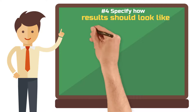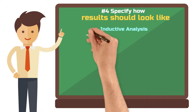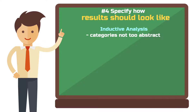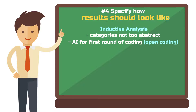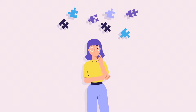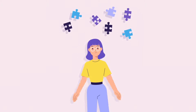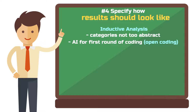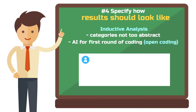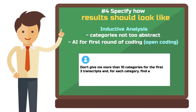For our example, we'll continue with an inductive analysis, developing categories from scratch. I recommend using the AI only for labor-intensive tasks, which typically means the first round of coding — often referred to as open coding. For later, more theoretical codes or themes, we involve our own creativity more. For the open coding, we want ChatGPT to keep categories from being too abstract: "Don't give me more than 10 categories for the first three transcripts, and for each category find a text example of at least three sentences that best reflects the category."